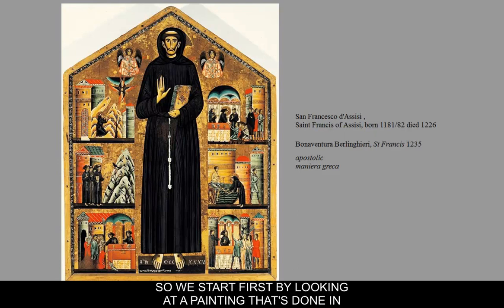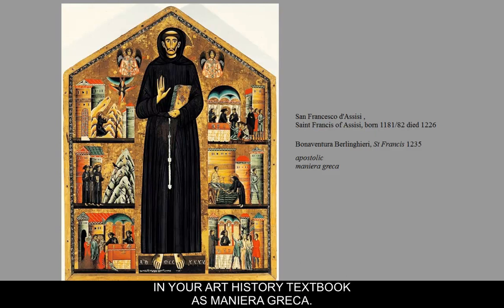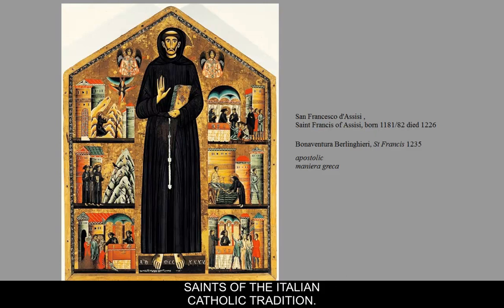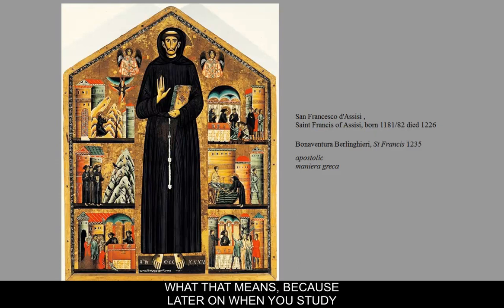We start first by looking at a painting done in the Greek manner — sometimes called Maniera Greca in art history textbooks. St. Francis is one of the first great apostolic saints of the Italian Catholic tradition, and understanding what that means will be really important later when you study the Reformation.